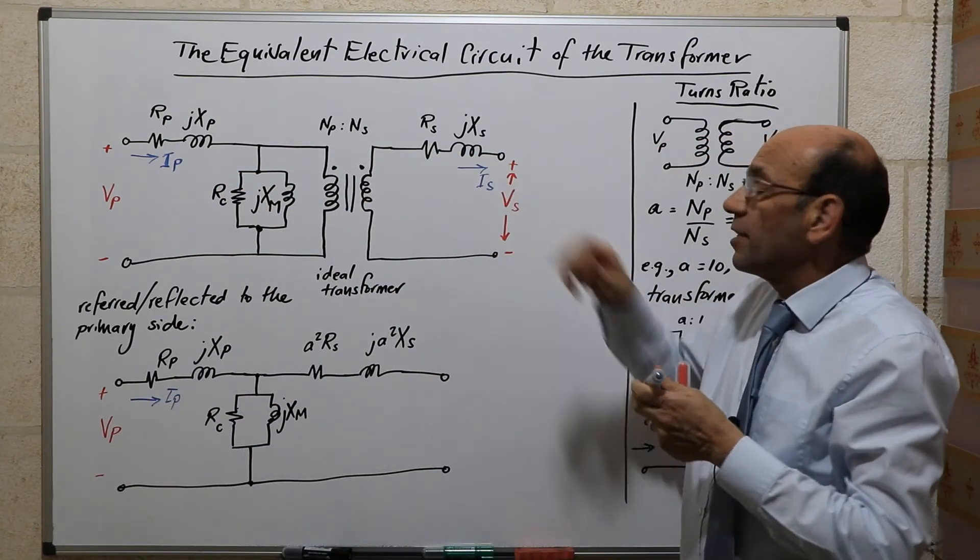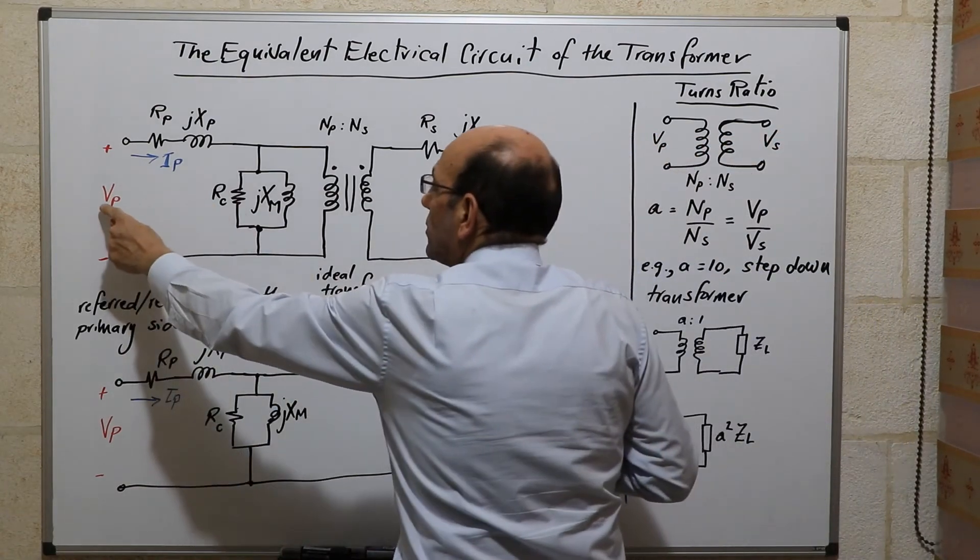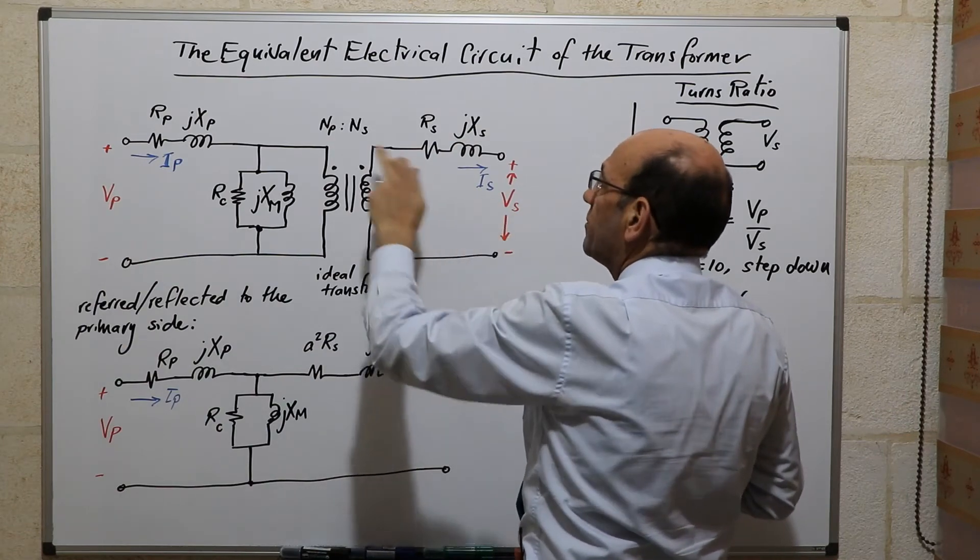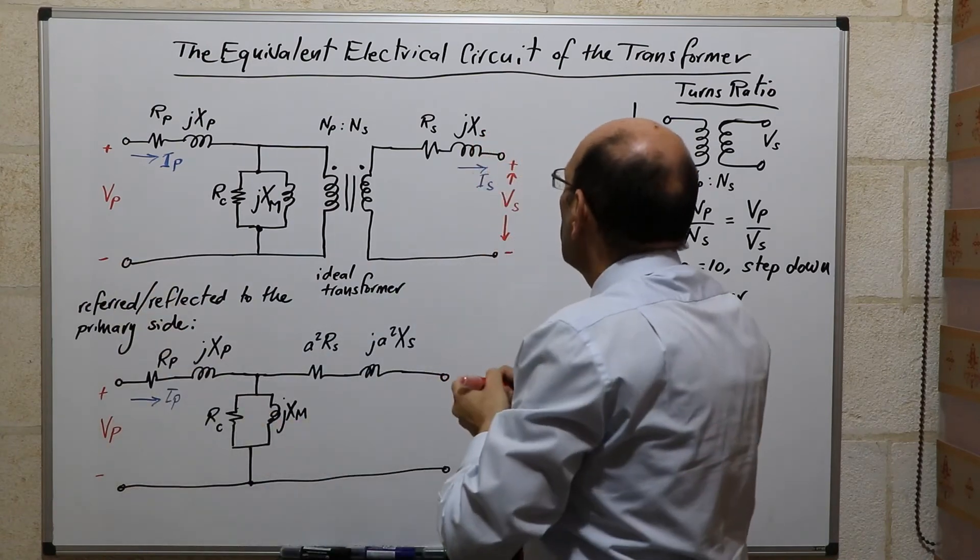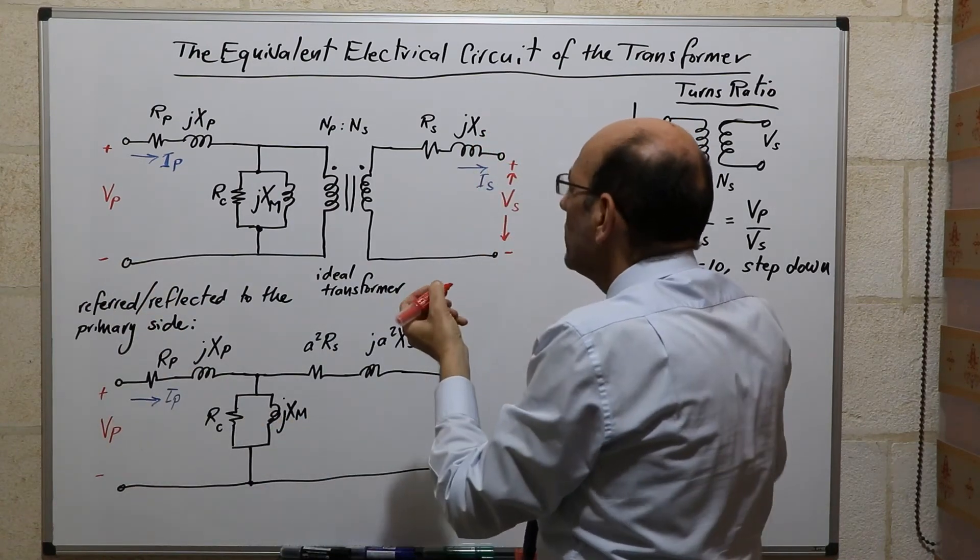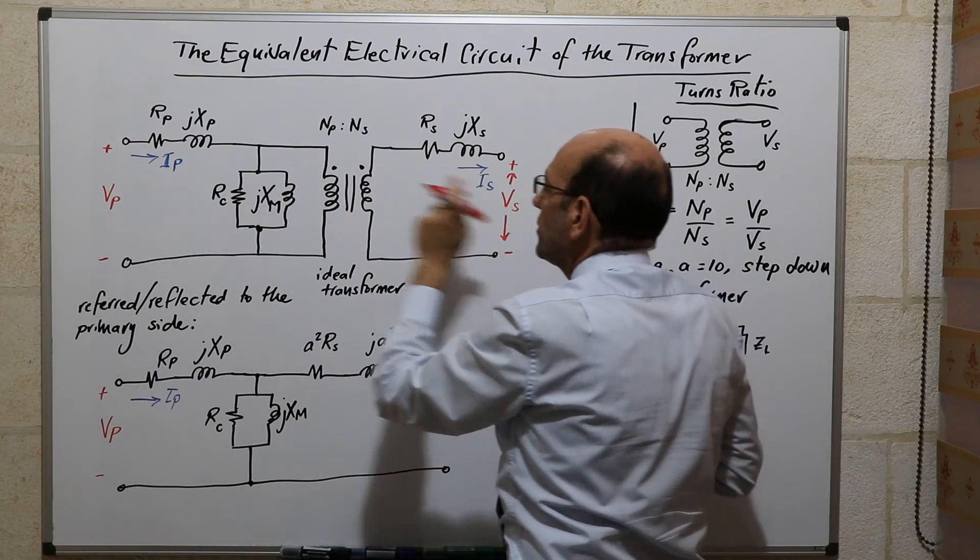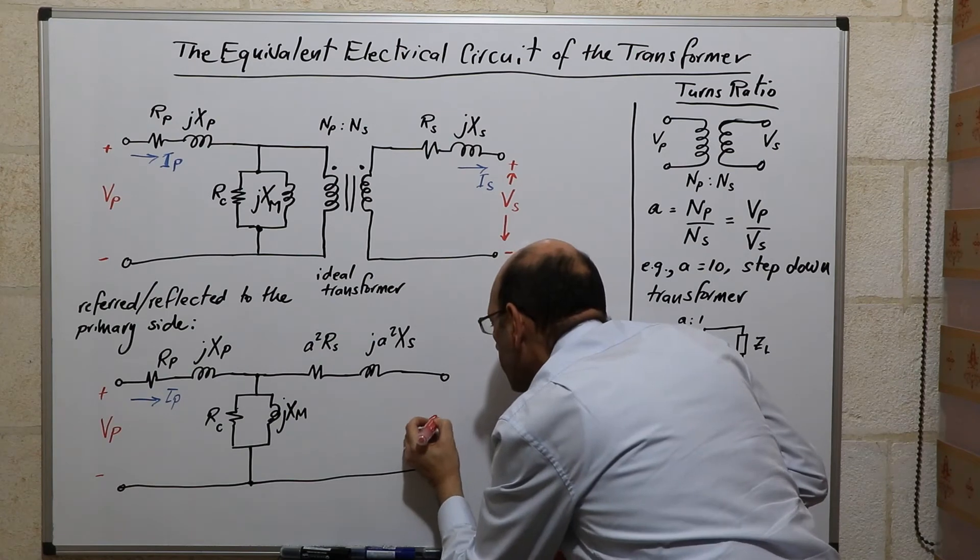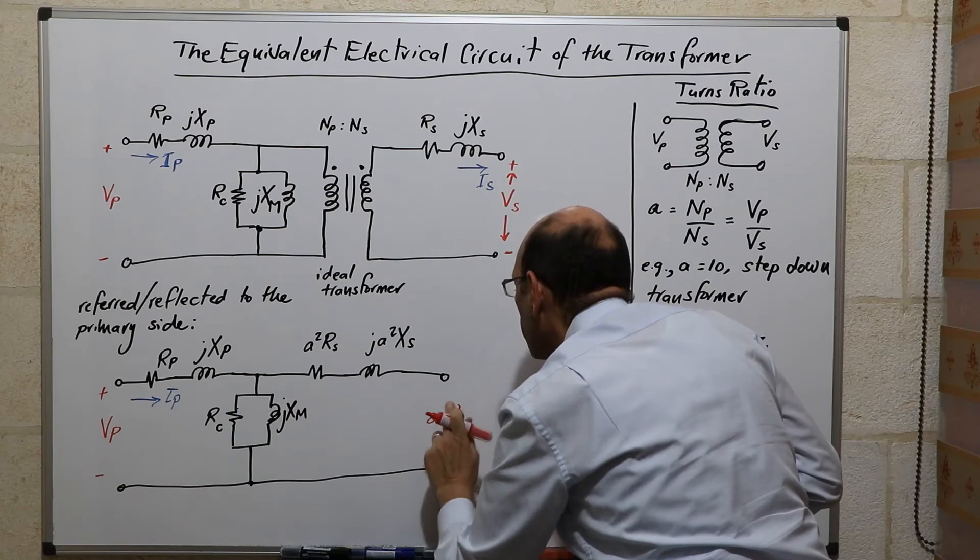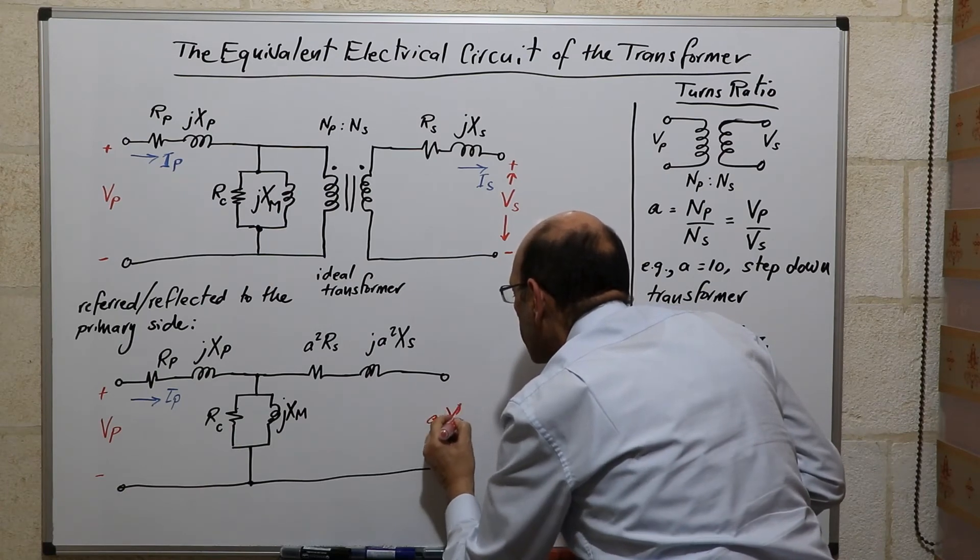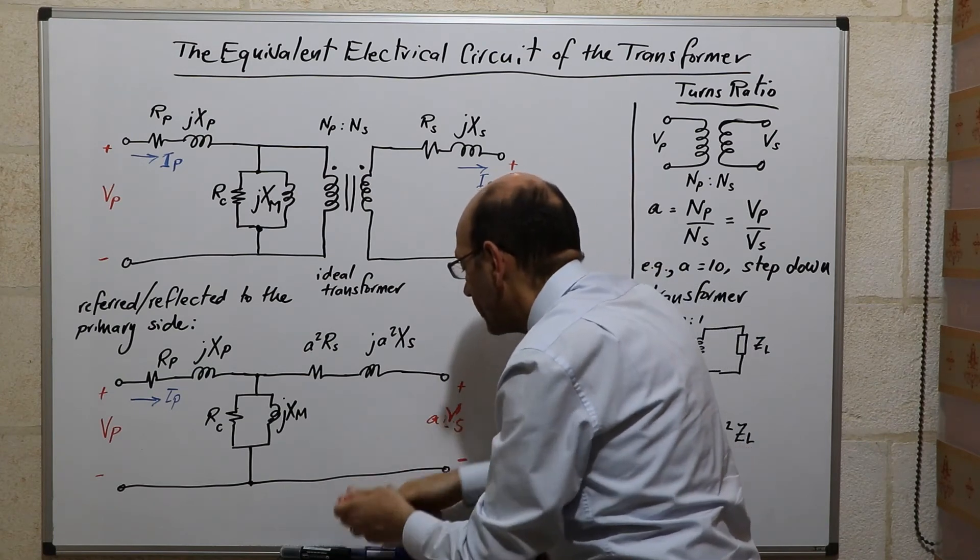But the voltages and currents will be seen in a different way. So if we remember that when we transfer from this voltage to this voltage, we divide by A. So when we transfer from this side to this side, we divide by A. So from this side to this side, we will multiply by A. So this becomes A times Vs, and this will become Is divided by A.